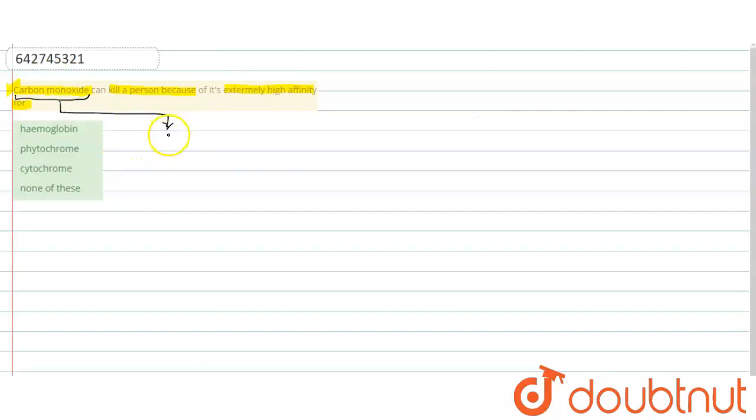Carbon monoxide, denoted by CO, has extremely high affinity to bind with our hemoglobin.